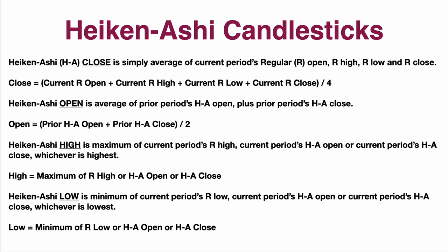I find Heiken Ashi candlesticks help us do that. A couple more things we need to know. Keep in mind what these averages are for the open and for the close. The open deals with what happened in the prior period. The close for your current Heiken Ashi candlestick that you're looking at is the average of everything that happened that day: high, open, low, close.